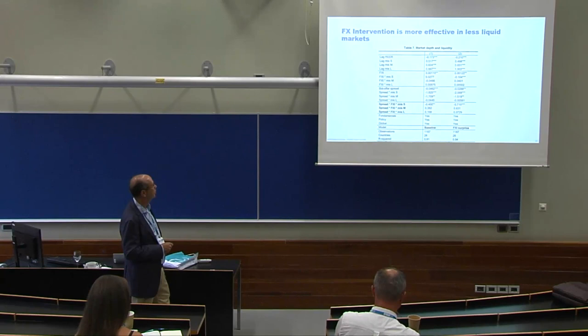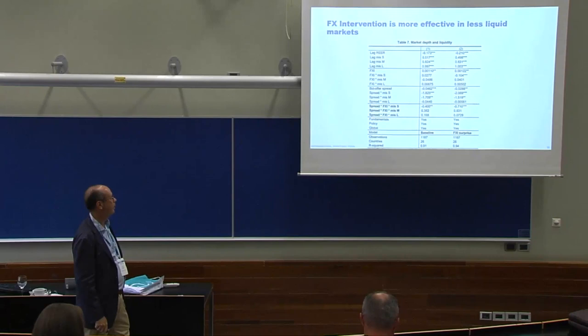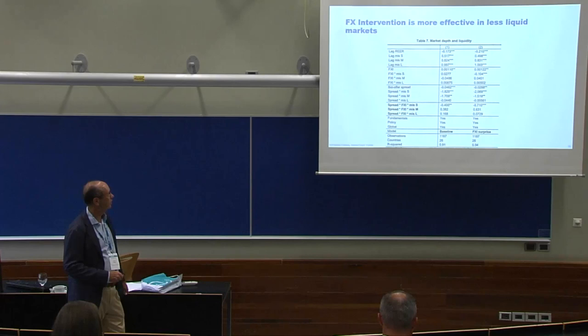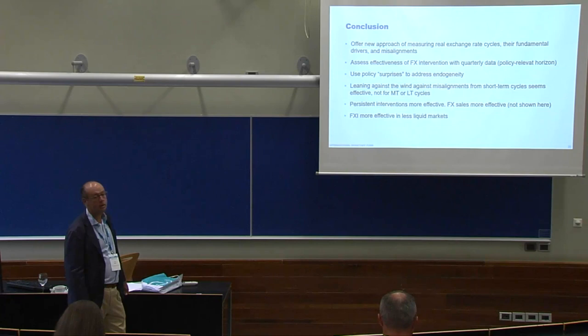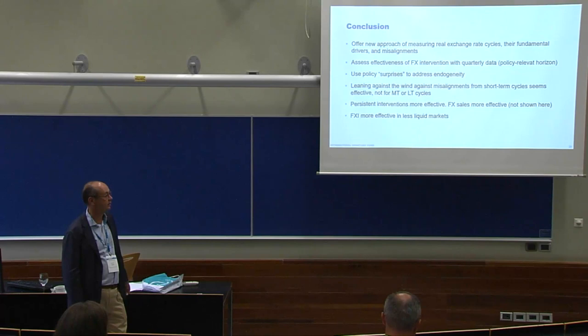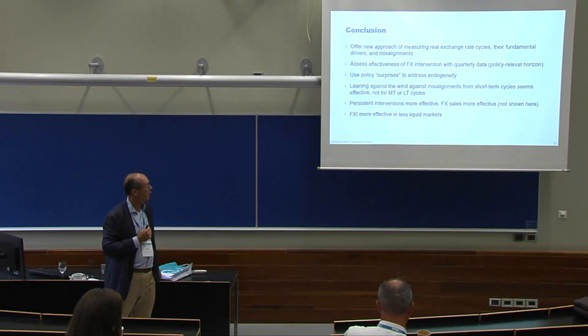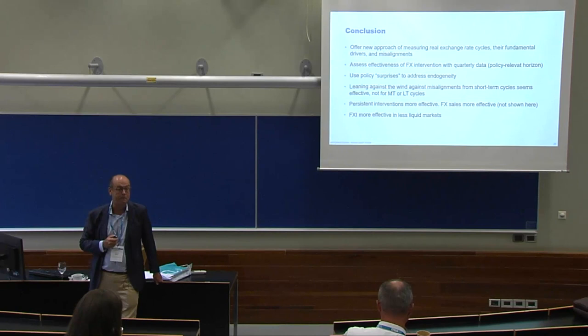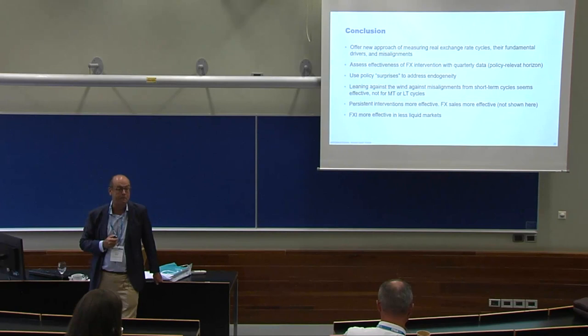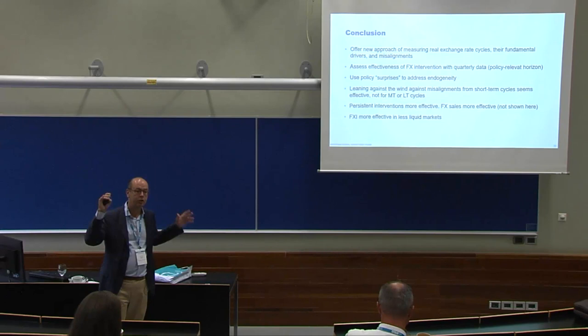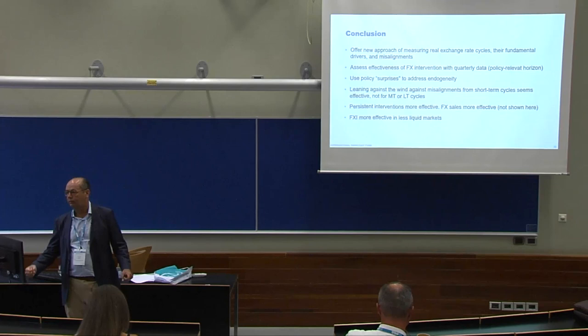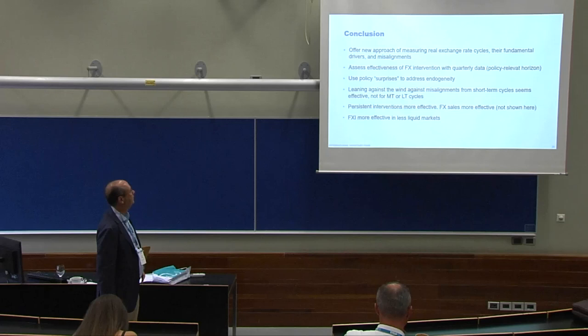In all these regressions, we always find the same kind of interaction with the short-term misalignment. There's something special about misalignment vis-à-vis the one-to-four-year cycles that makes intervention more effective. To sum up: we offer a new approach to investigating FX intervention using quarterly data at a policy-relevant horizon. We find that leaning against the wind can be effective, but only for relatively short-term misalignments — central banks cannot stem long-term real exchange rate cycles driven by fundamentals.